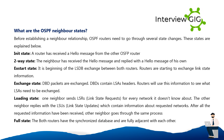What are the OSPF neighbor states? Before establishing a neighbor relationship, OSPF routers need to go through several state changes. In the Init state, a router has received a Hello message from another OSPF router. In the Two-Way state, the neighbor has received the Hello message and replied with a Hello message of its own. In the ExStart state, LSDB exchange between both routers begins, and routers start exchanging Link State information.